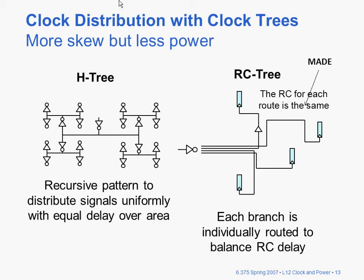In addition to a grid, you might have something that resembles more like a tree. This is highly idealized — it probably wouldn't look much like this on an actual chip — but it's a recursive pattern to distribute signals uniformly with equal delay over an area. More likely, you'd have a clock buffer and make sure that the RC for each of these routes is approximately the same, taking into account buffers and looking at Elmore delays.